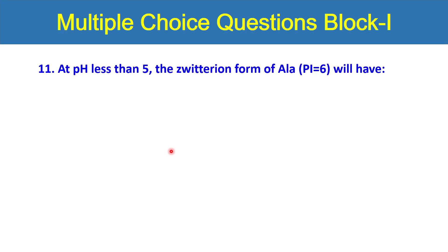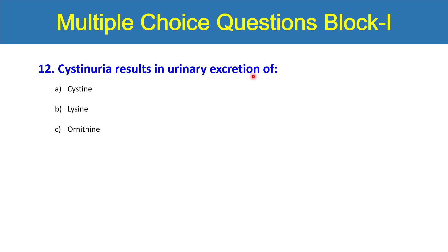Next question: at pH less than 5 the zwitterion form of alanine at pI 6 will have low solubility in water, net positive charge, net negative charge on carboxylic group, net negative charge, or overall charge zero? Please write down the answer on your paper. Next question is cystinuria results in urinary excretion of: cysteine, lysine, ornithine, arginine, or methionine? Which amino acid will be observed in the patient's urine sample suffering from cystinuria?